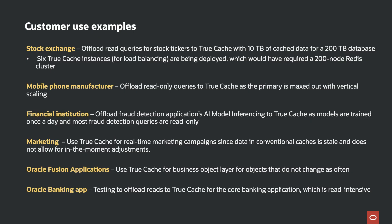A leading financial institution offloads fraud detection and AI model inferencing to True Cache. The models are trained once a day and most fraud detection queries are read-only, lending itself well to True Cache. Another institution is evaluating True Cache for real-time marketing campaigns, since conventional cache data can get stale and doesn't allow in-the-moment adjustments — True Cache's current data capabilities enable real-time campaigns. Oracle Fusion and Oracle banking applications are also testing True Cache for read offloading.